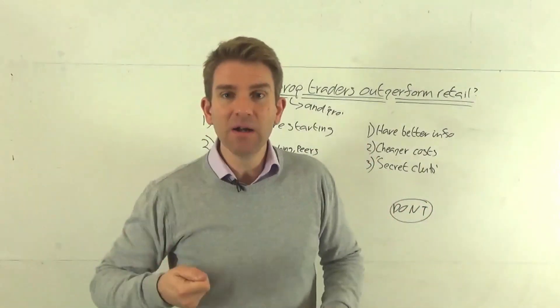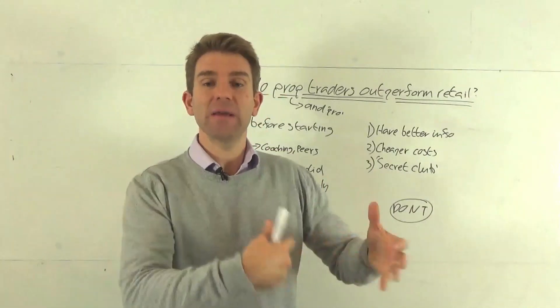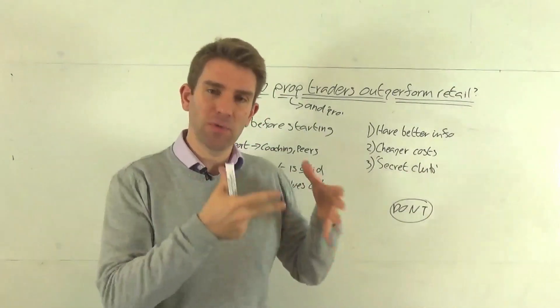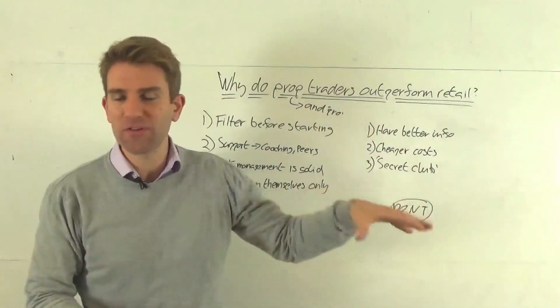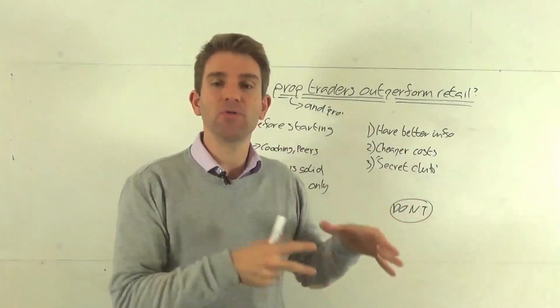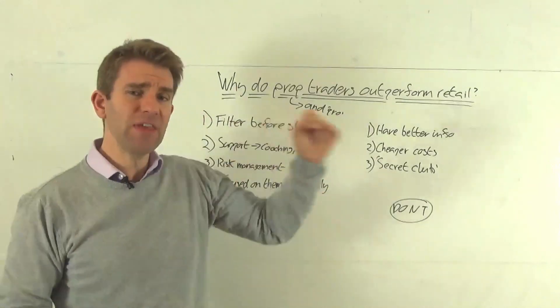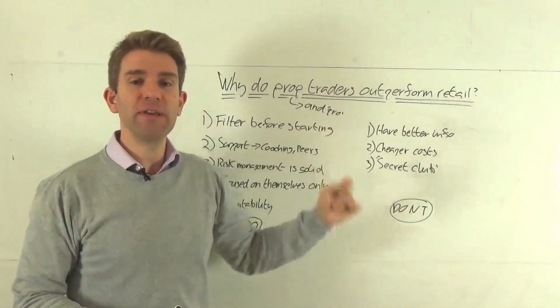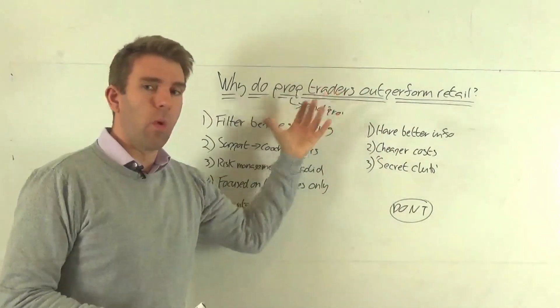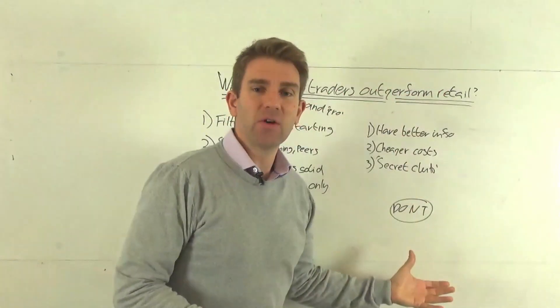There are different permutations and variables of that, but someone who's trading actively in the capacity of performance related pay, i.e. they're not just a dealer, they are someone who is saying, okay, if I make money, I get a percentage of the money that I make. That's what we're talking about specifically, wherever office they're sitting in, but that as opposed to someone who's just an order taker. So why do these companies generally outperform retail?